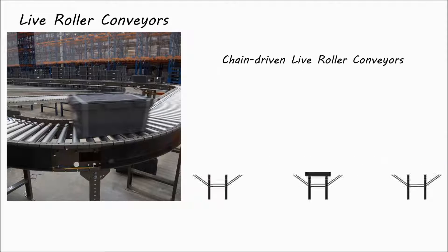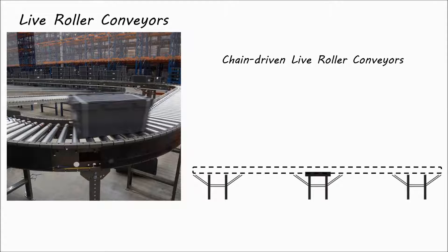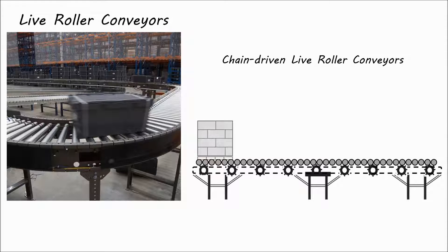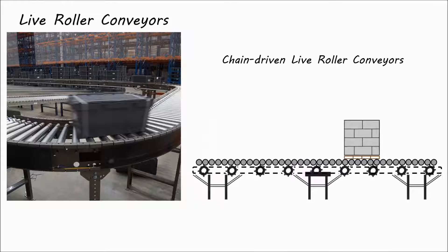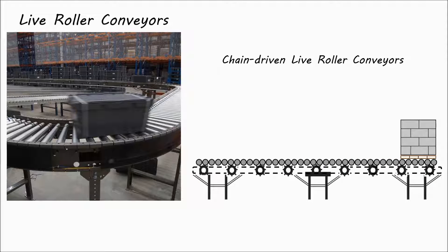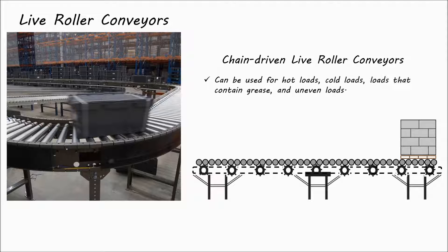Chain driven live roller conveyors utilize chains to drive sprockets on the rollers. The properties of the chain and rollers allow this type of conveyor to be used in a wide variety of applications not suited for belt driven conveyors, including hot and cold loads, loads that contain grease, and uneven loads.